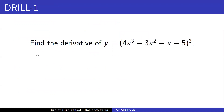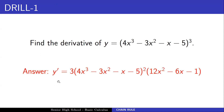Now you try this one: find the derivative of y = (4x³ − 3x² − x − 5)³. Pause the video and try to answer. The answer is y' = 3(4x³ − 3x² − x − 5)² × (12x² − 6x − 1). I hope you learned how to differentiate functions using the chain rule.